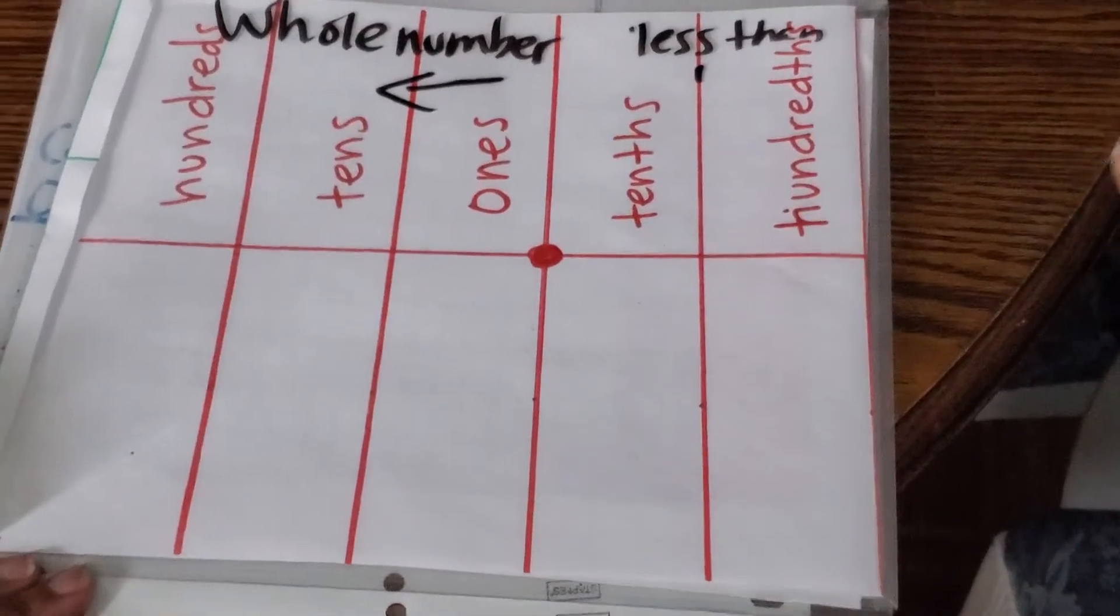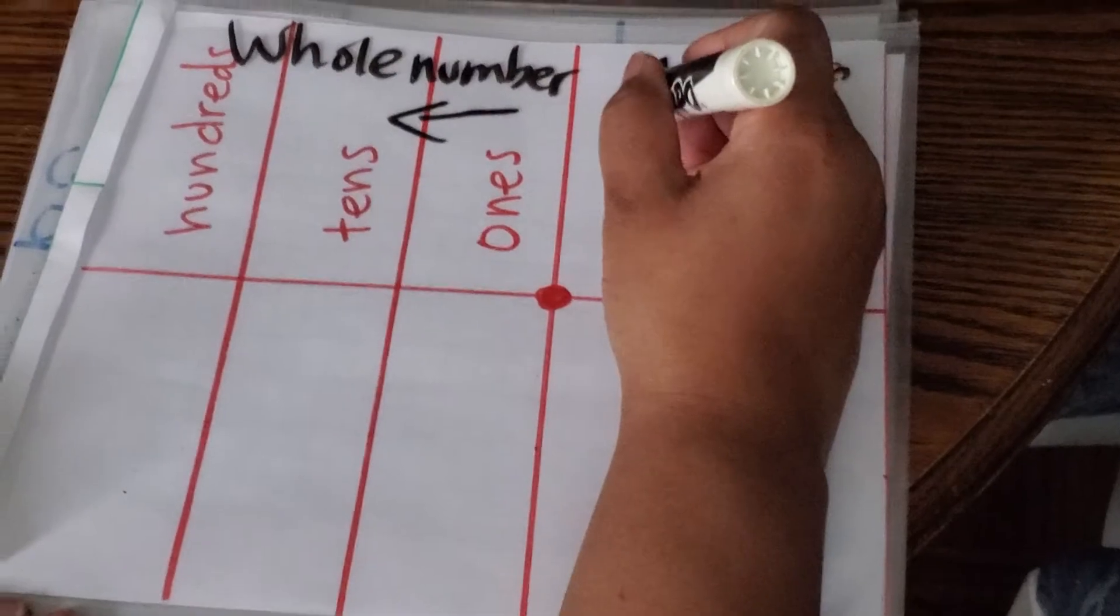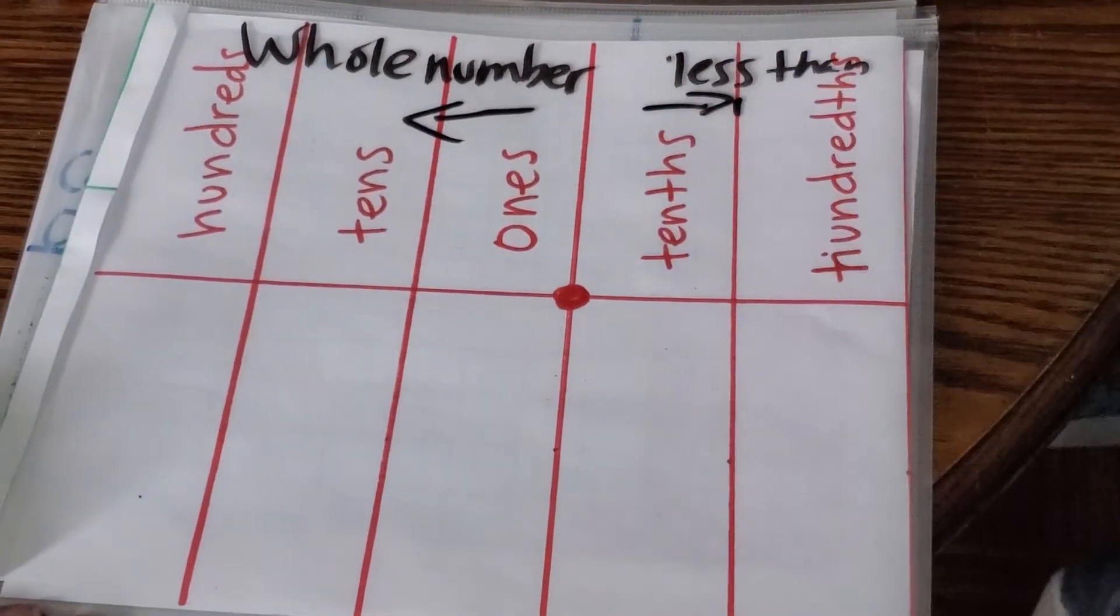And then you go further. From hundreds, you go to thousands and whatever. But we don't deal with that in fourth grade. That's just something for you to know. The numbers get smaller as you go to the right.